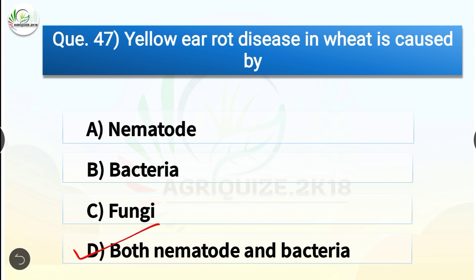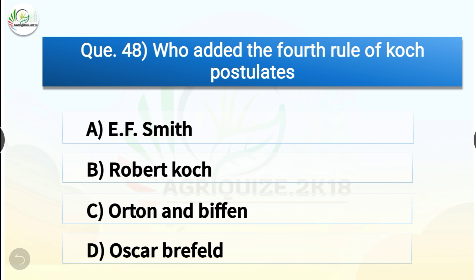Question number forty-eight: Who added the fourth rule of Koch's postulate? The options are E.F. Smith, Robert Koch, Orton and Biffen, or Oskar Brefeld. The correct answer is option A, E.F. Smith. Three rules for experimental proof of the pathogenicity of an organism were presented in 1883 by the German bacteriologist Robert Koch. A fourth was appended by E.F. Smith.